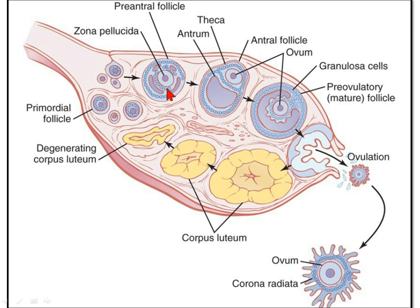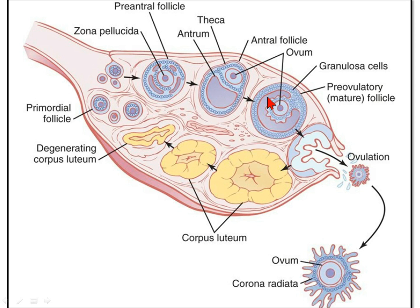The cells around the oocyte become multilaminate through proliferation, forming multiple layers called follicular cells or granulosa cells. These granulosa cells secrete fluid which accumulates in small spaces known as lacunae — that is why this is also known as the pre-antral phase. Later, these lacunae fuse to form a large cavity called the follicular antrum, which pushes the oocyte towards the periphery. The follicular cells surrounding the oocyte are now called cumulus oophoricus cells.